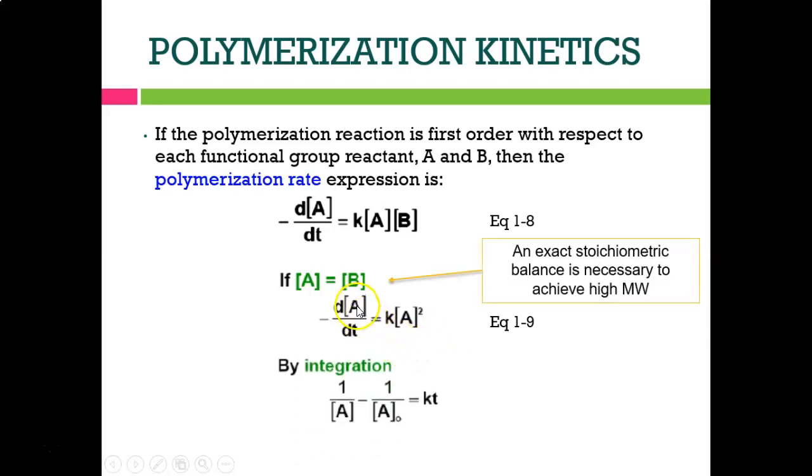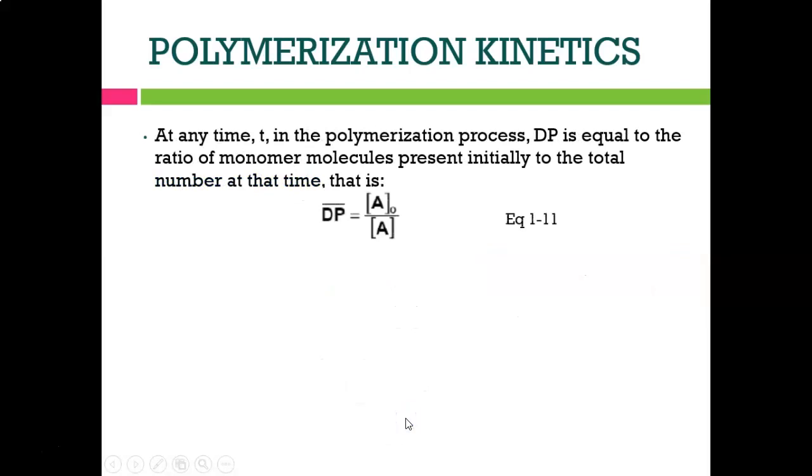Then we integrate this equation. This is the function for learning calculus. We integrate the reaction and obtain 1/A minus 1/A0. At any time T in the polymerization process, Dp equals the ratio of monomer molecules present initially to the total number at that time. As we know, Dp equals A0/A or N0/N. Since we refer to monomer A, we use A.